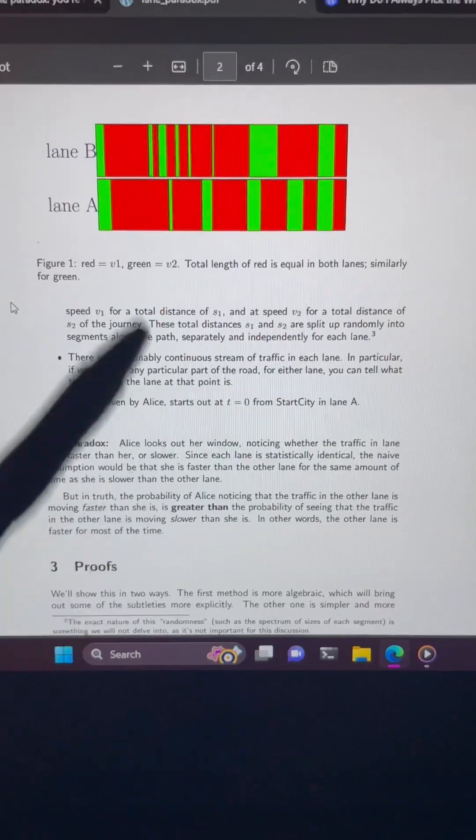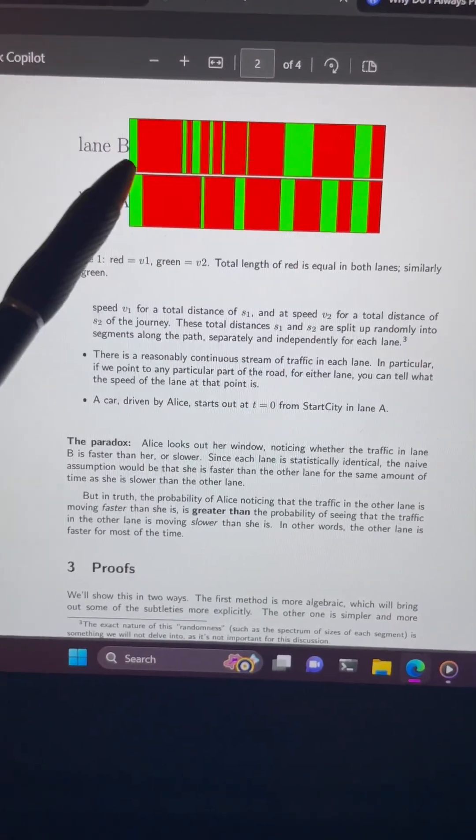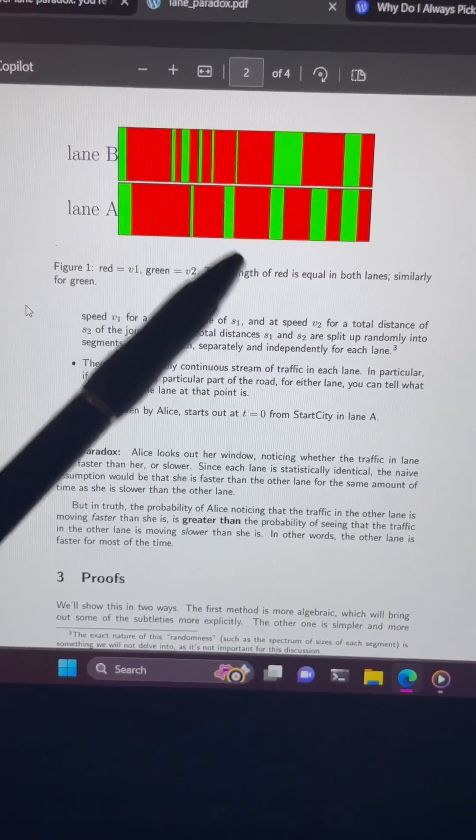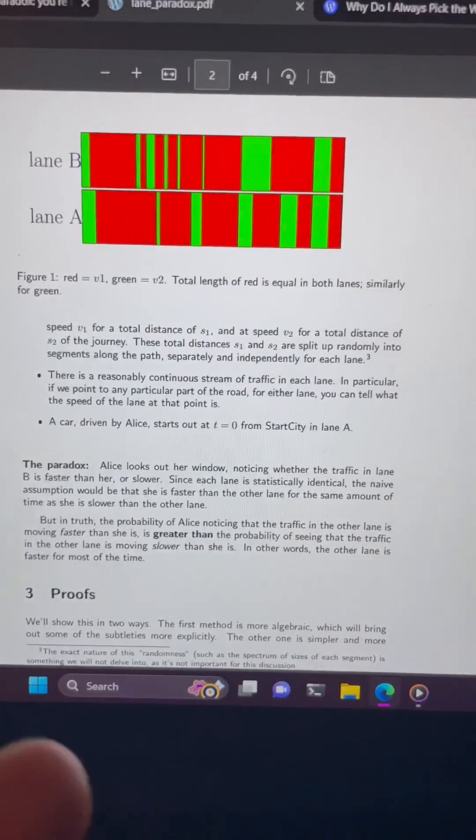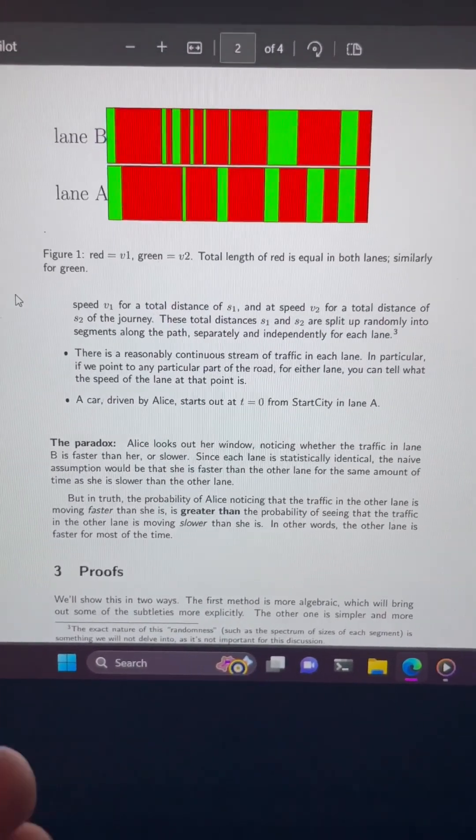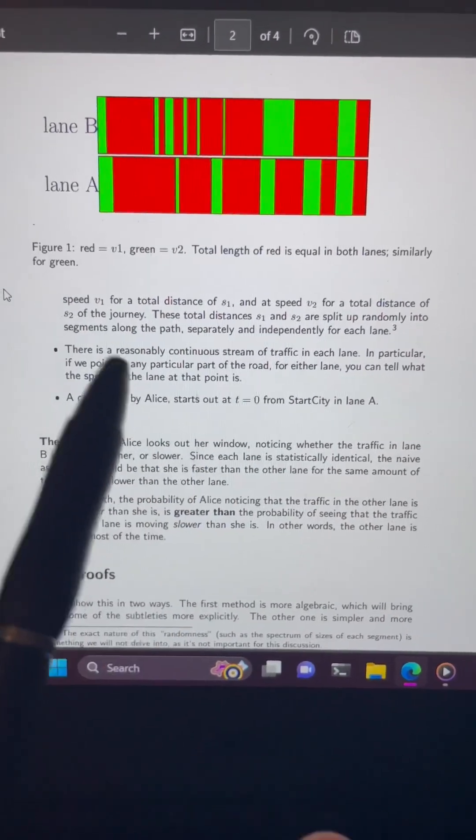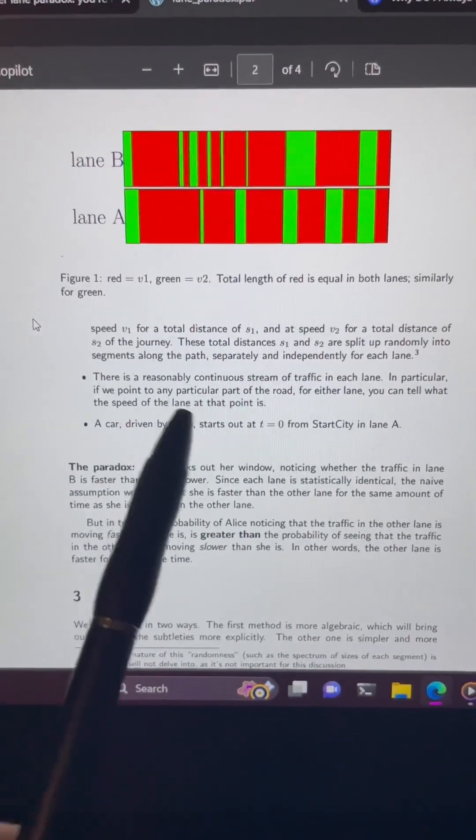The paradox arises because since both lanes are statistically the same, you would expect that if you look out your window to the other lane, there would be an equal chance of it being either slower or faster than you. However, that is not the case.